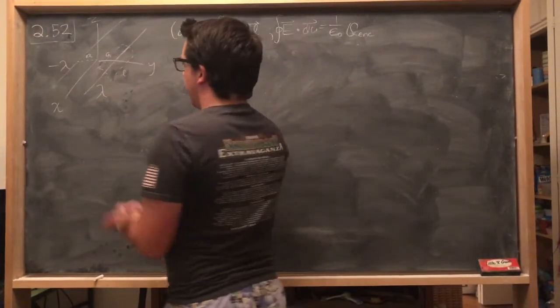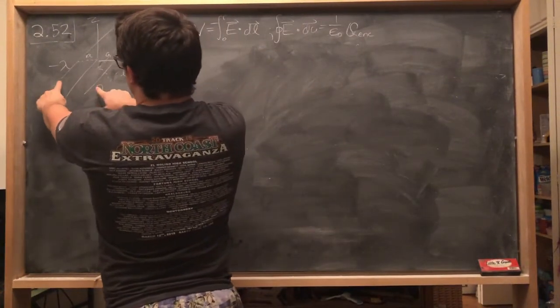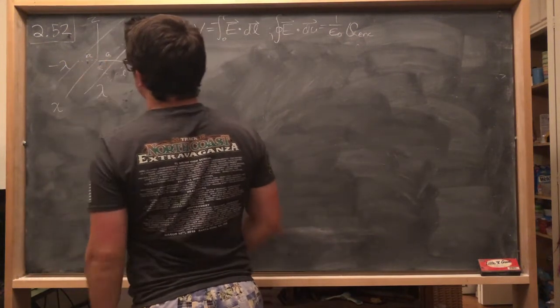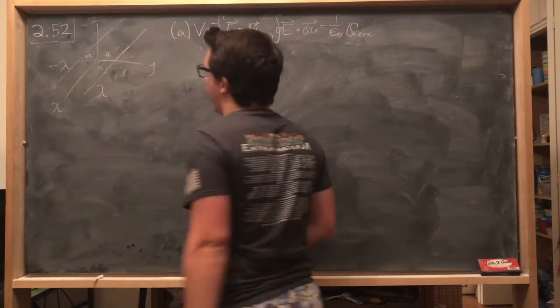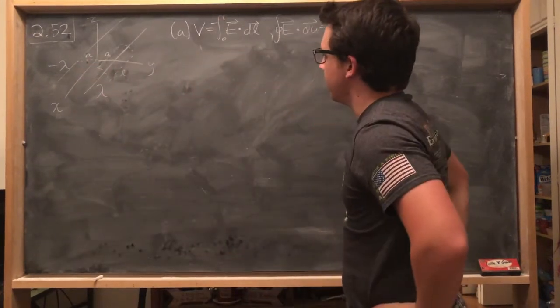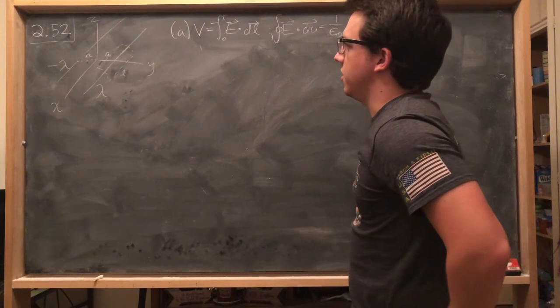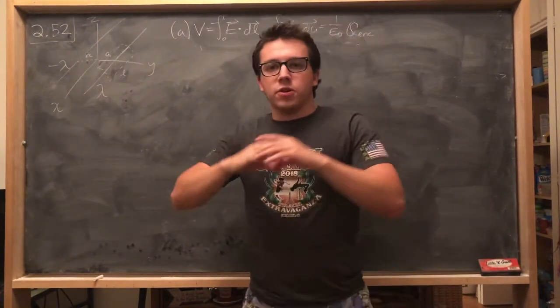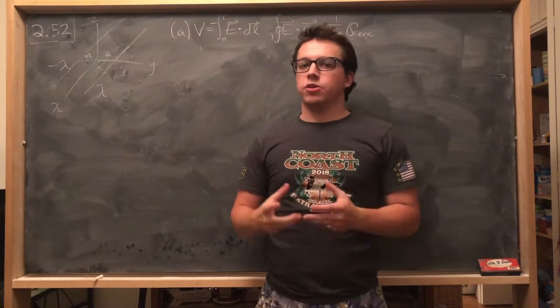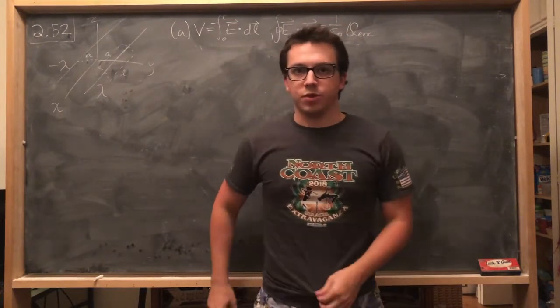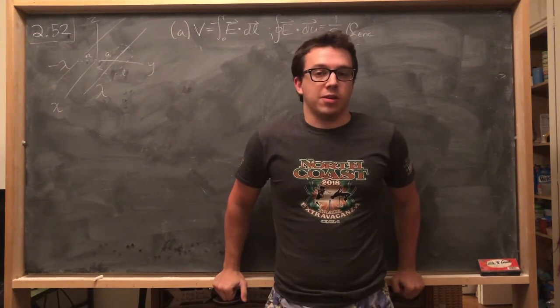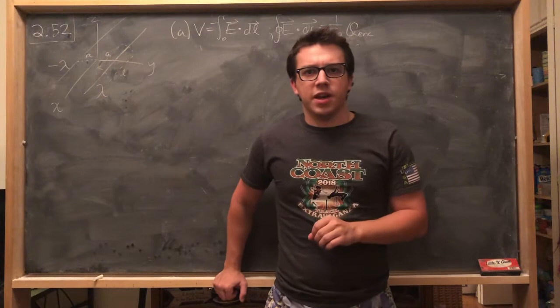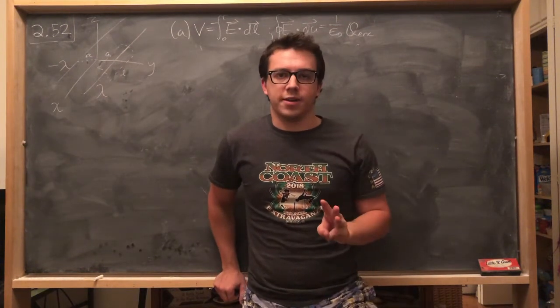So we have two wires parallel to the x-axis with these charge densities. They're distance a from the x-axis in the y direction. And we want to calculate the potential of this whole system. Now an overarching theme and one thing that you should really take away from chapter two of Griffith's E&M on electrostatics is this idea that in electrostatics you're going to have three really important quantities.